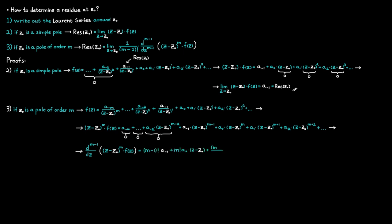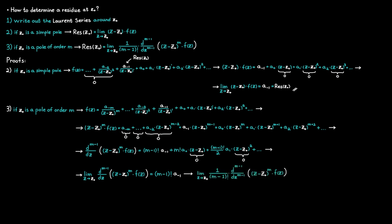Now we can take the limit on both sides and let c approach C0 — all the remaining parentheses simply become zeros — and by simplifying we end up with the expression for a_{-1}. Dividing by the factorial of (m−1) gives us the final formula, which equals the coefficient a_{-1}, also known as the residue. By this we have managed to prove this formula for a pole of order m.